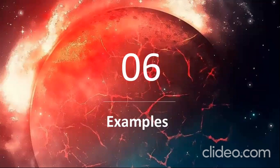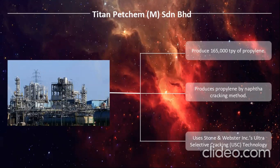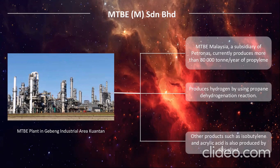Now we move on to several examples of plants that produce propylene in Malaysia. The first is Titan Petrochemicals, located in Pasir Gudang, Johor. It produces 165,000 tons per year of propylene using the naphtha cracking method and Stone & Webster ultra-selective cracking technology. The next plant is MTBE Malaysia, located in the Gebeng industrial area, Kuantan. MTBE Malaysia is a subsidiary of Petronas and currently produces more than 80,000 tons per year of propylene using the propane dehydrogenation reaction. Other products such as isobutylene and acrylic acid are also produced by this plant.